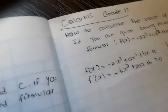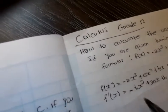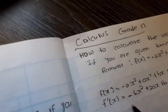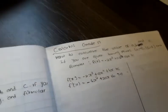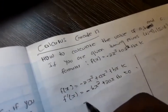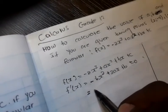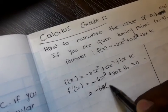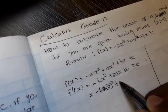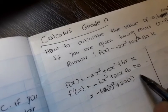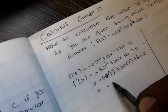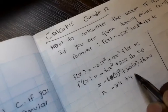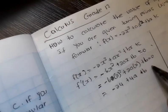Since you've got the formula of your turning points, you can substitute the turning points. For the first one, you will substitute x = 2. It will be: negative 6(2²) + 2A(2) + B = 0. This gives you negative 24 + 4A + B = 0.